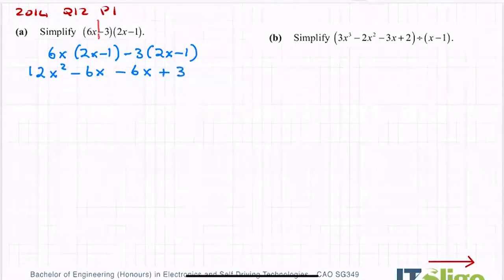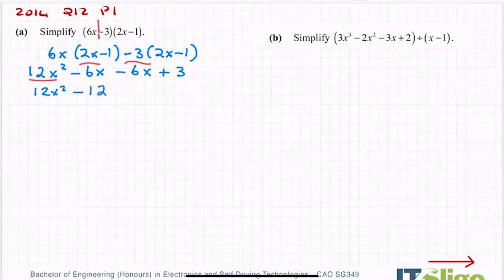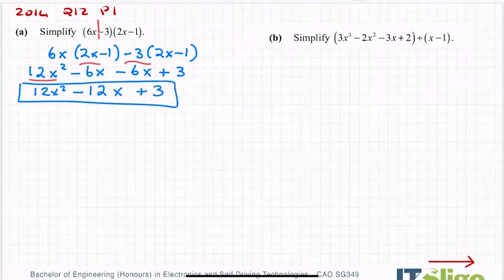Now be careful here because you have minus by minus to give you a plus — 3 ones are 3. You can only group like terms together, so x squareds can only go with x squared — I only have one of them. Then x's can go with x's: minus 6 minus 6 — if someone owes you 6 euros and then they owe you another 6, it's minus 12x — and then plus 3. So that's your answer. That was part A.